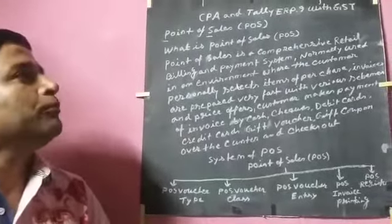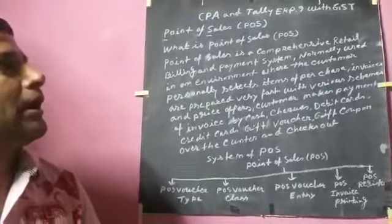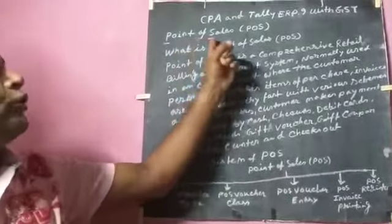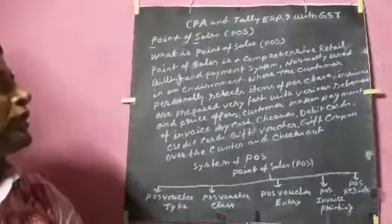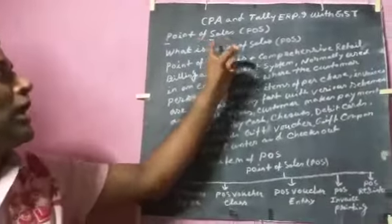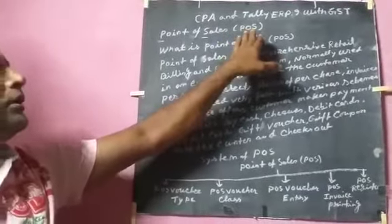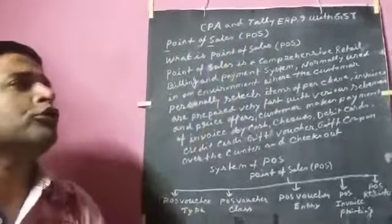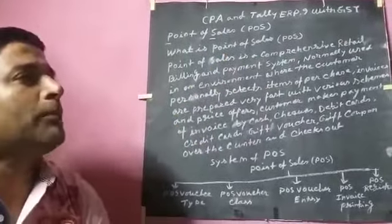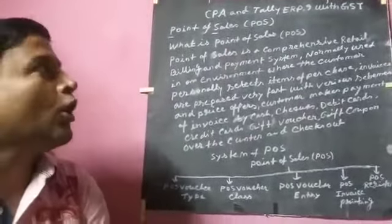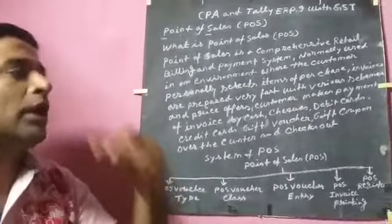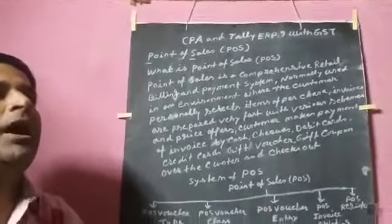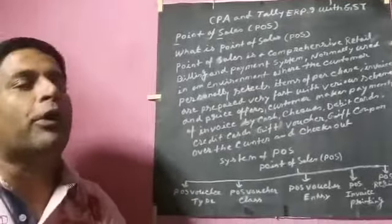There is an item and a chapter called Point of Sales. Its full abbreviation is POS, and its full name is Point of Sales. So how do we approach this Point of Sales?